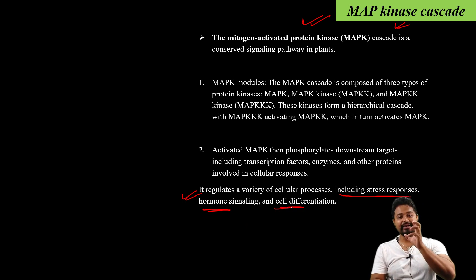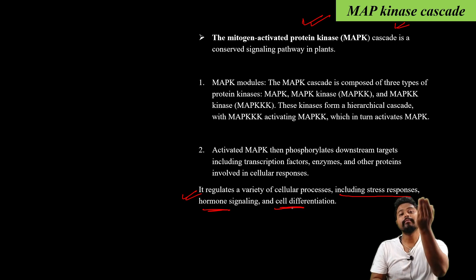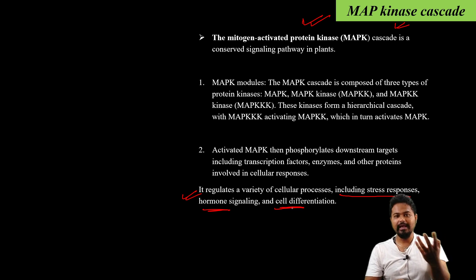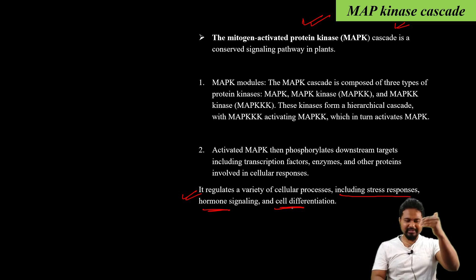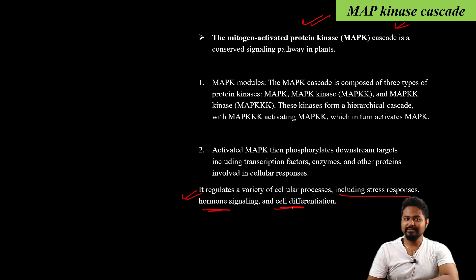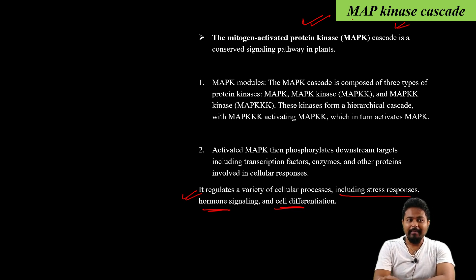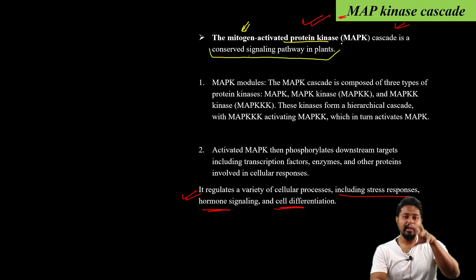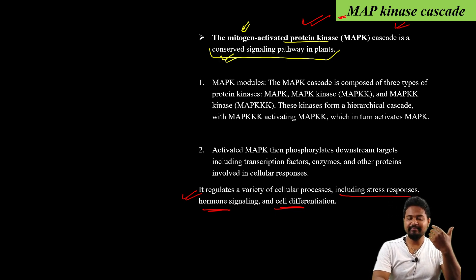Cell differentiation means that one cell becomes a leaf cell, another becomes a xylem cell, another is a phloem cell, and another is a stem or cork cell — these are examples of cell differentiation. The full form of MAP is mitogen-activated protein kinase. This is a conserved signaling pathway found in plants and also in animals.